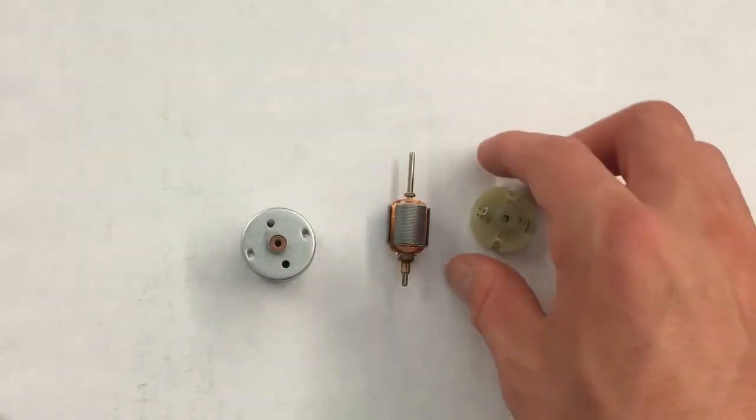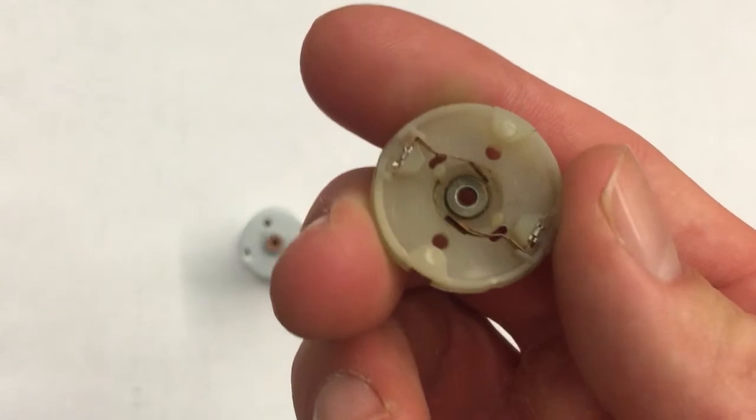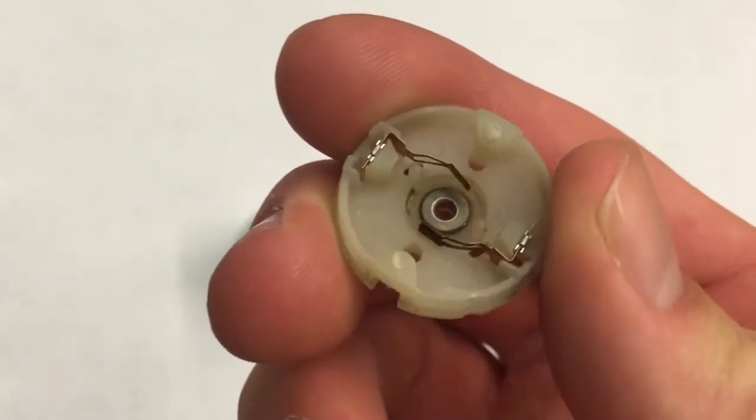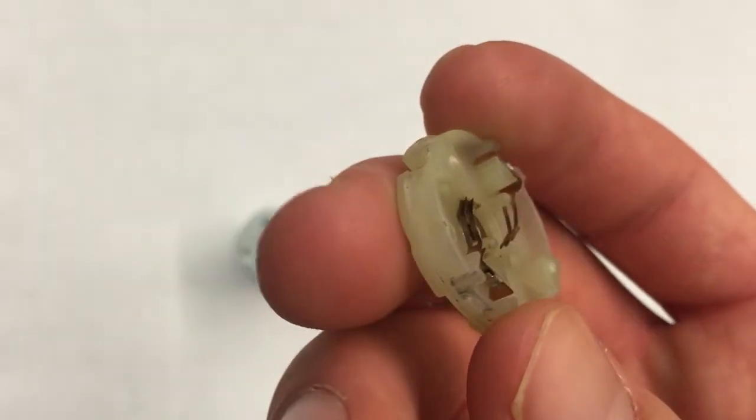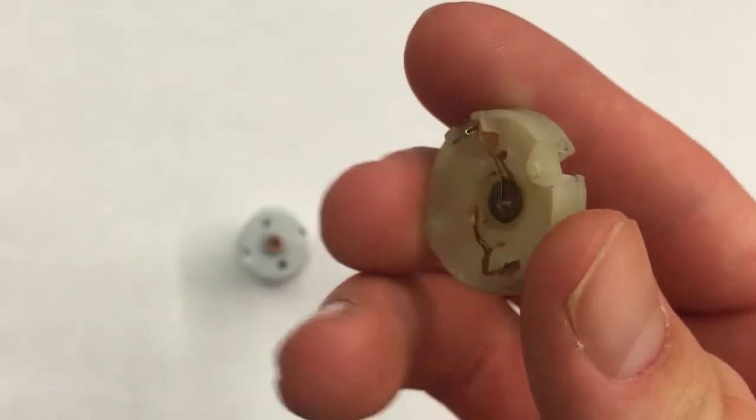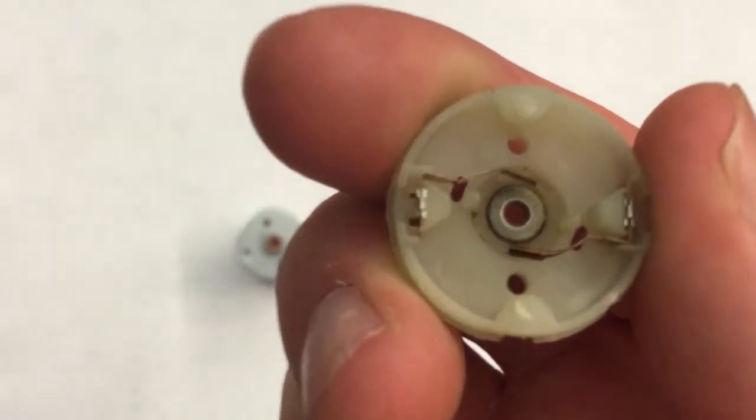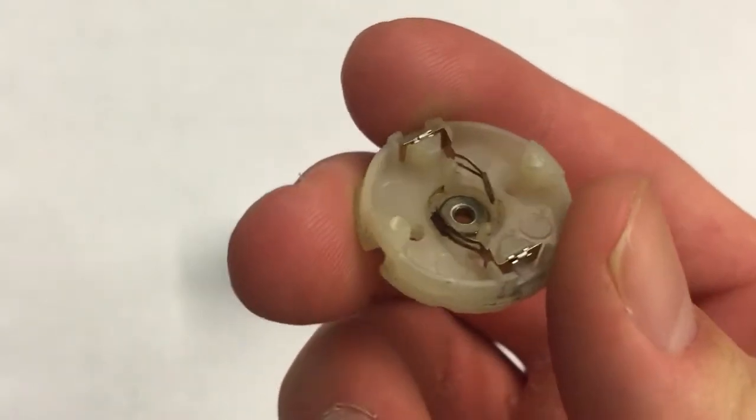The cap closes off the motor from the outside environment. It is made of a cheap plastic, because that's very inexpensive and very easy to mold into this shape. It has two electrodes to attach wires to, and also has a metal ring inside of it, so that when the axle is placed through, it does not grind down the plastic.